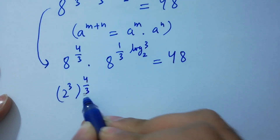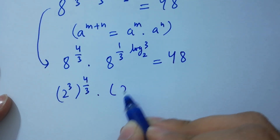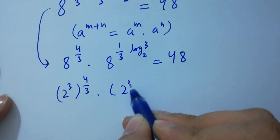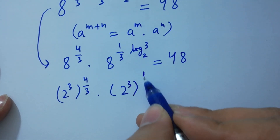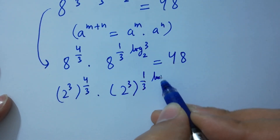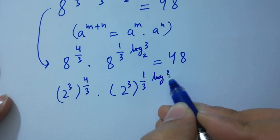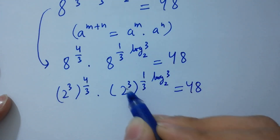3 and 3 cancel. We get 2 to the power 4 times 2 to the power log 3 to the base 2, equals 48.